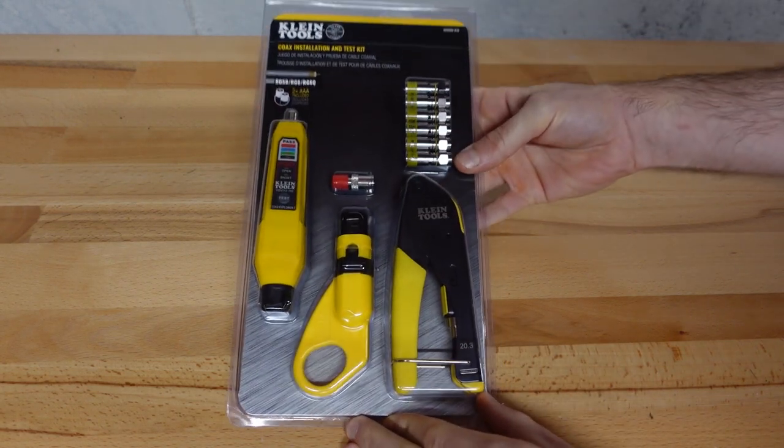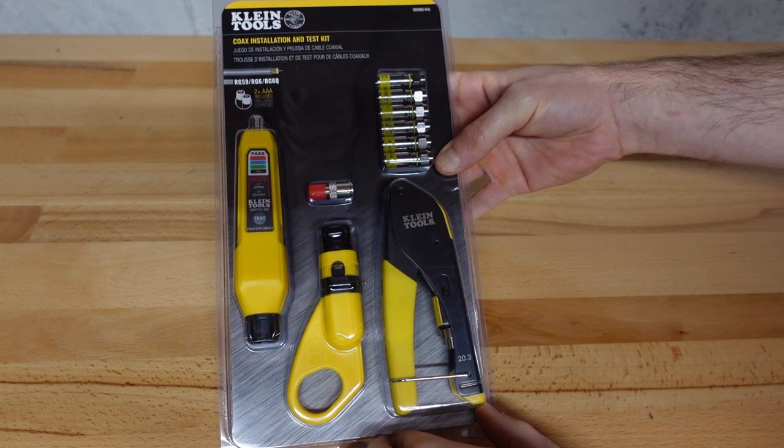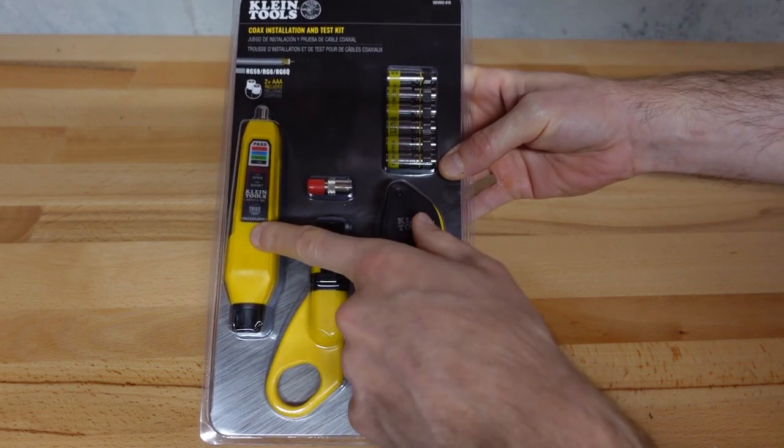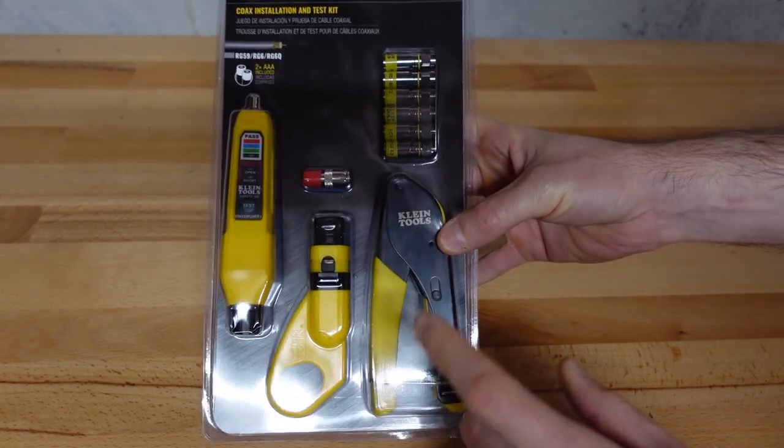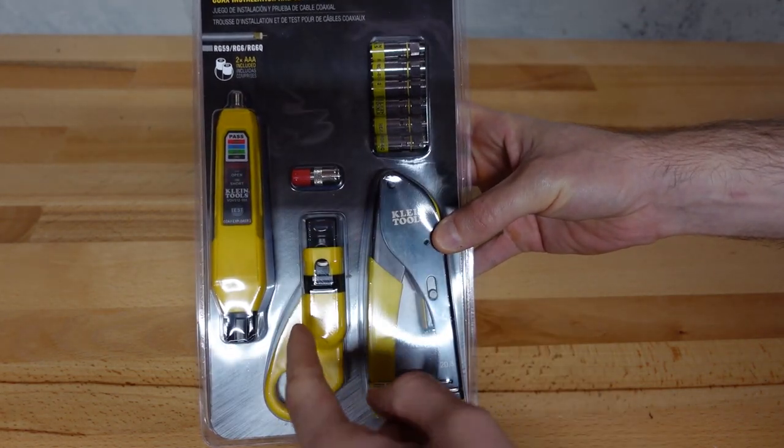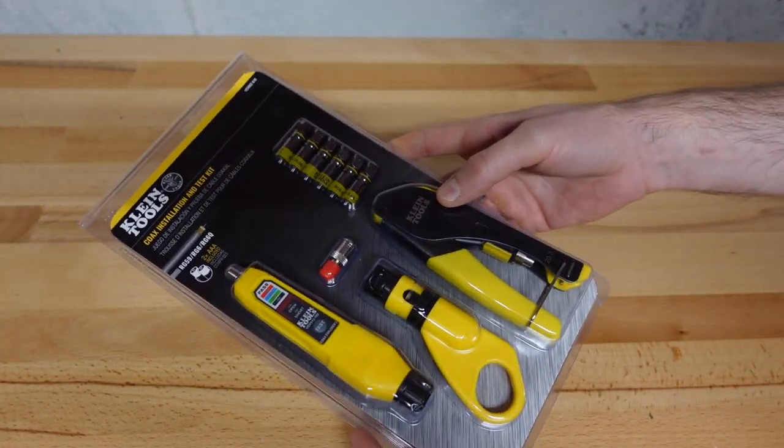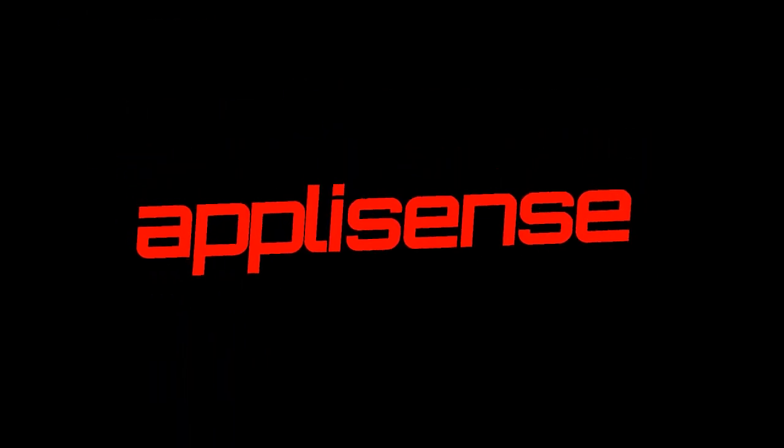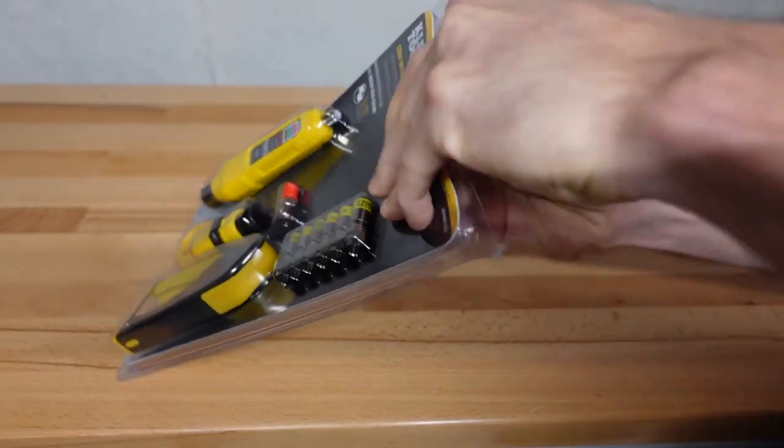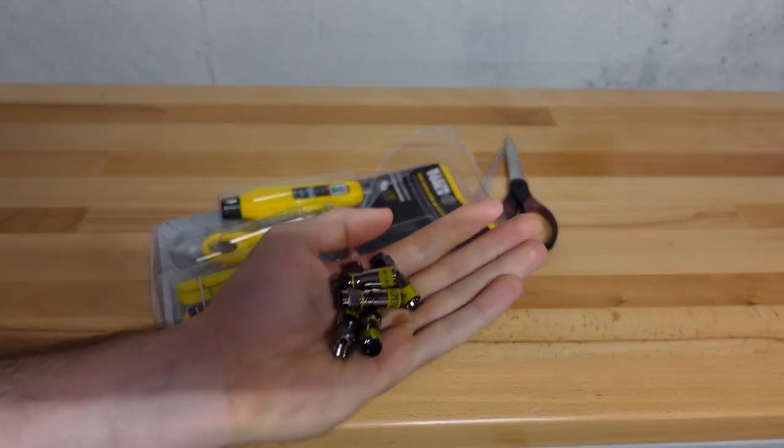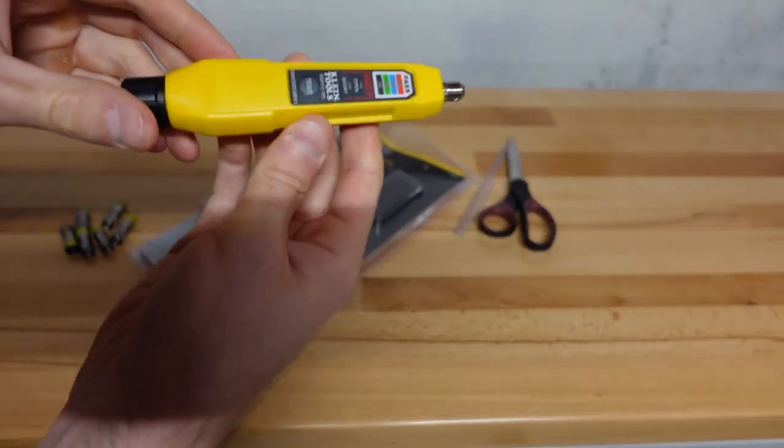Right here we have the Klein tools coax set. This is a coax installation and test kit. You have the tester here, the ends right here, the crimper here, and the stripper right here. I'm going to get this unboxed and take a look at this. Here are the ends, the tester, the crimper, and the stripper.